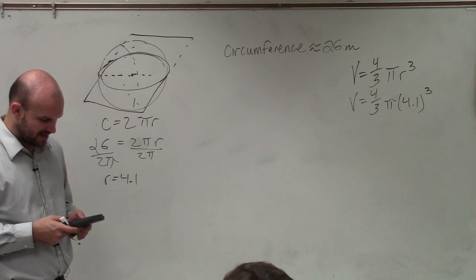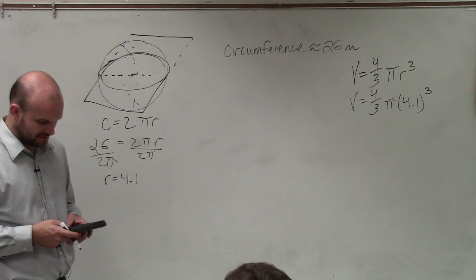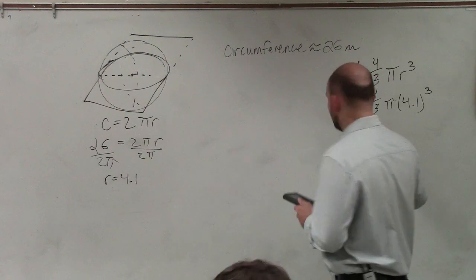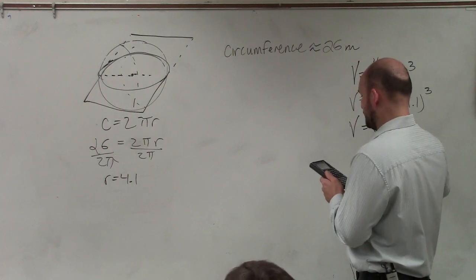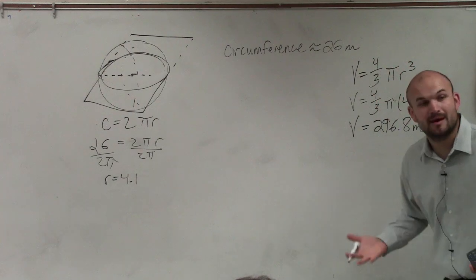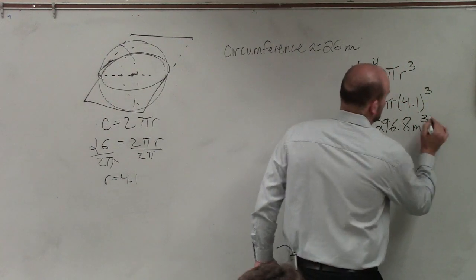And then I multiply that times pi. And then I multiply that times 4 thirds. And therefore my final answer, volume equals 296.8 meters. And again, remember your units, when we're talking about volume, is going to be cubed.